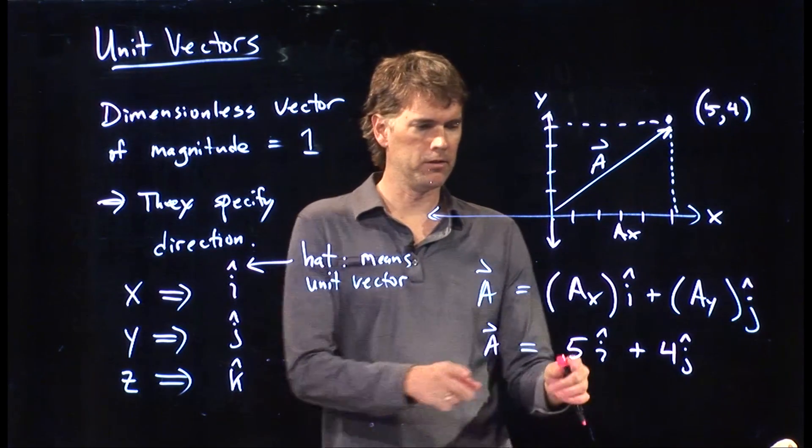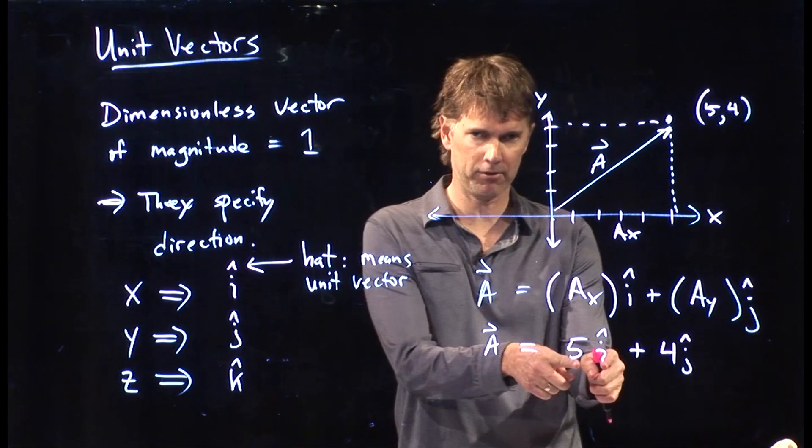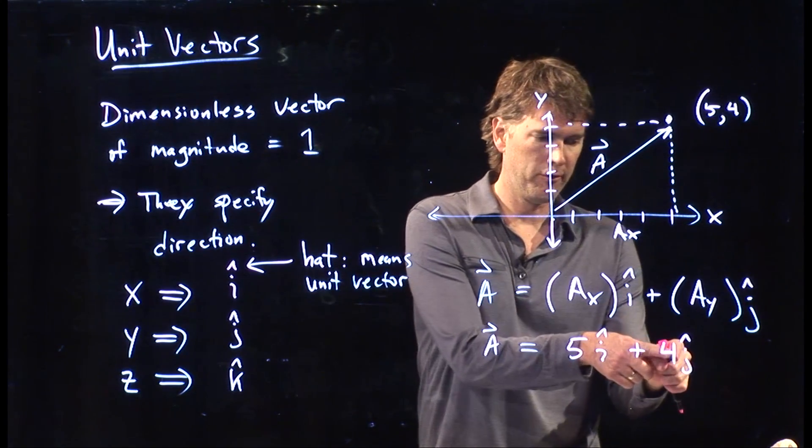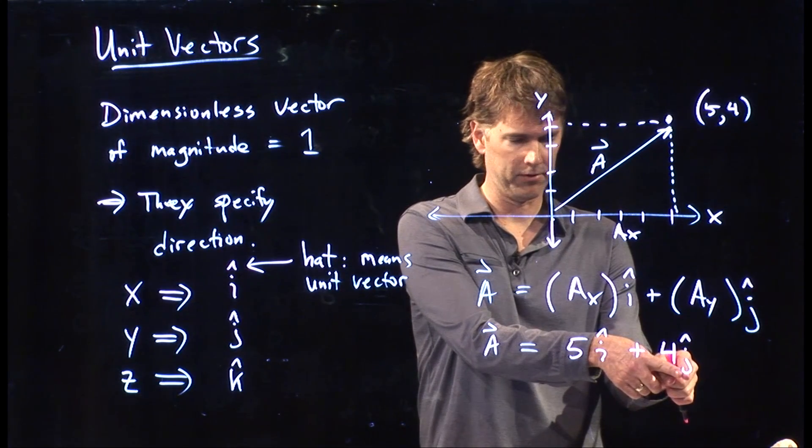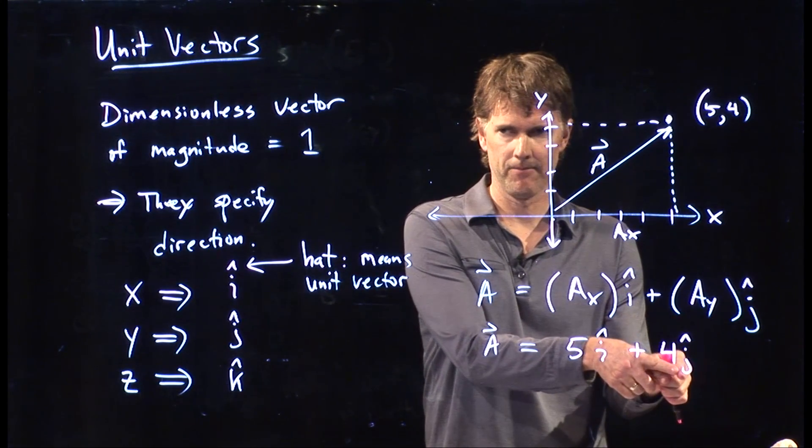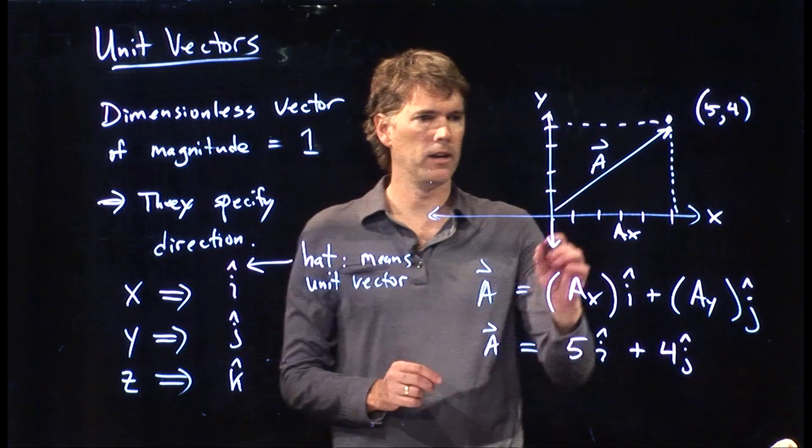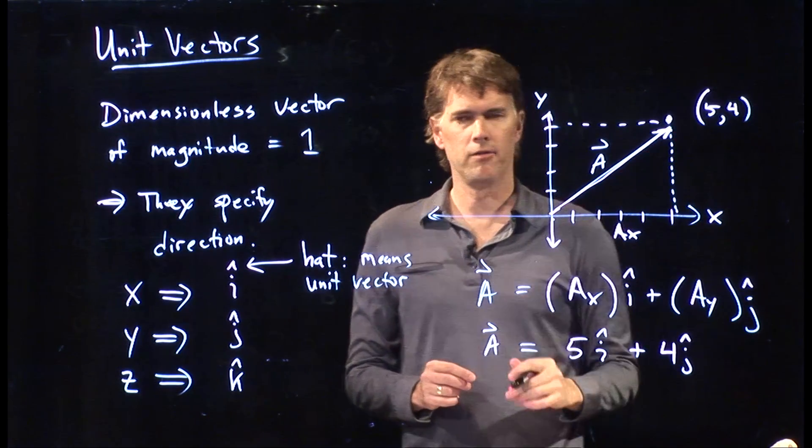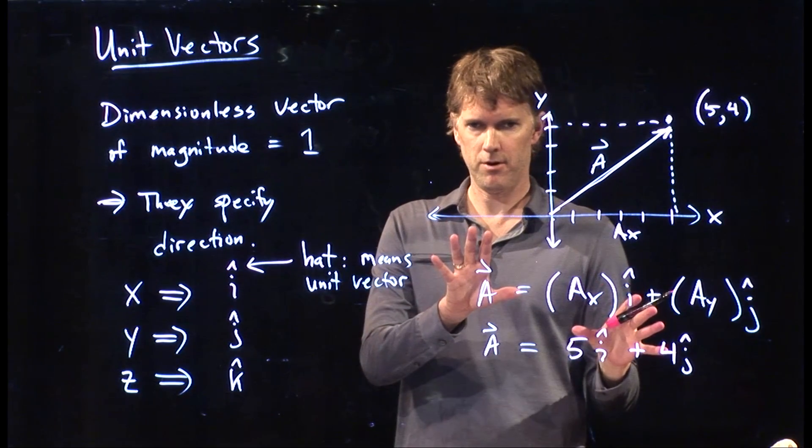And what it means is, let's move five units in the x-direction. That's what the i-hat means. And let's move four units in the y-axis direction, which is the j-hat. That's what those two things mean. And that is this vector right here. It starts at the origin, and it goes up to that point, five comma four. Everybody okay with that so far?